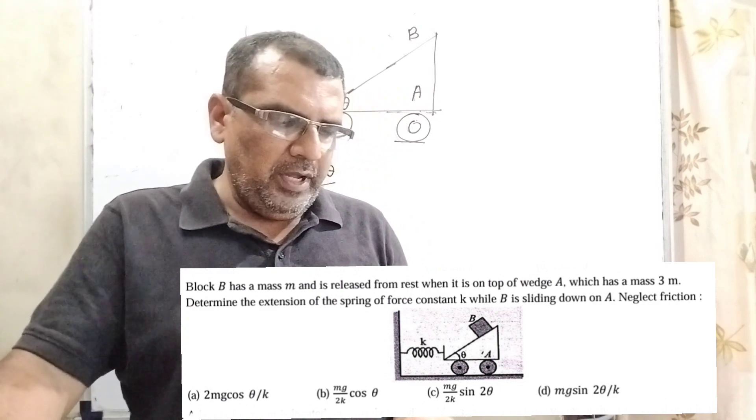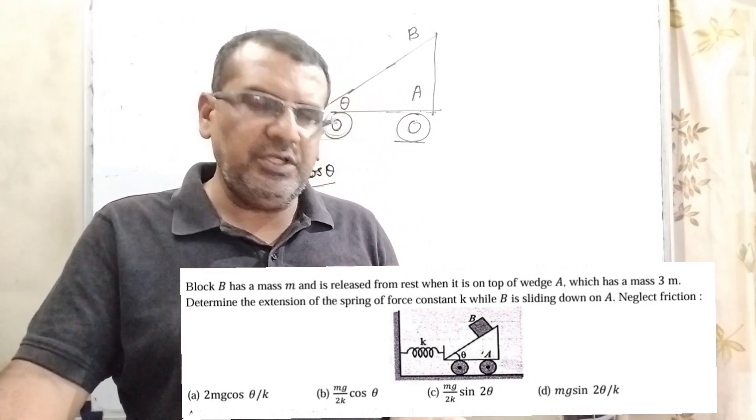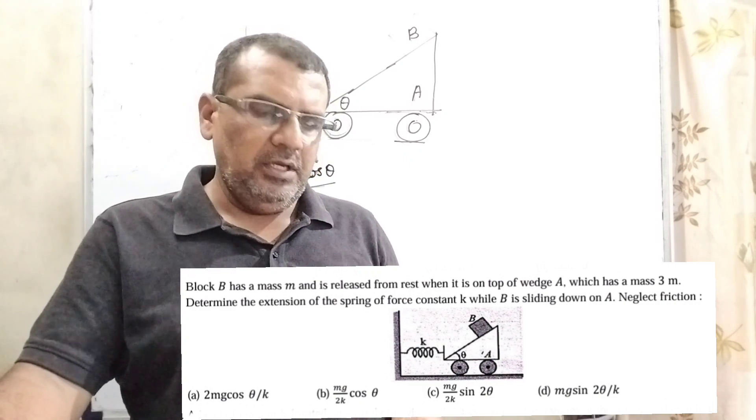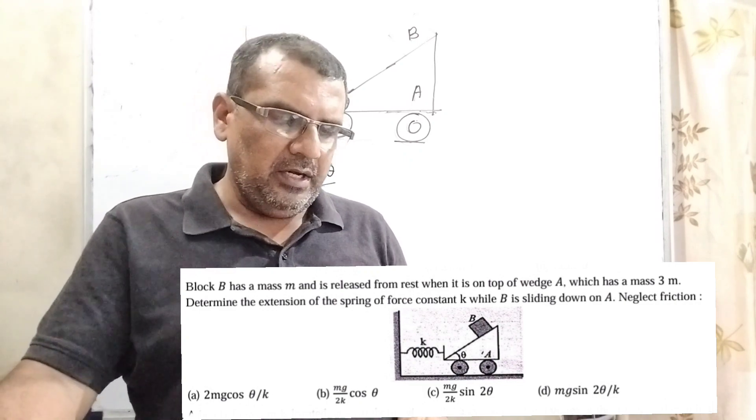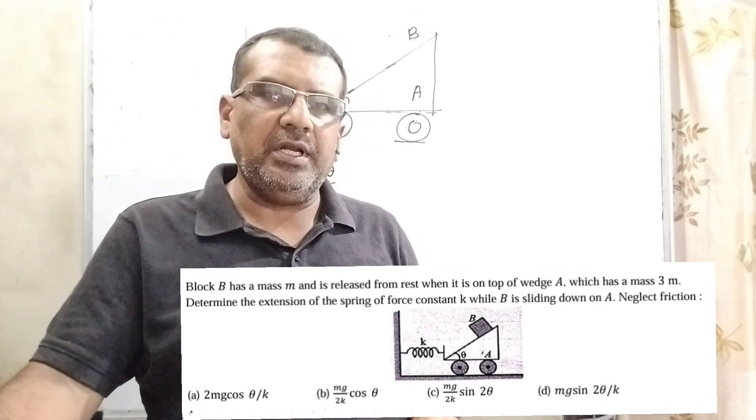Option A: 2Mg cos theta by K. Option B: Mg cos theta by 2K. Option C: Mg sin 2 theta by 2K. And option D: Mg sin 2 theta by K.